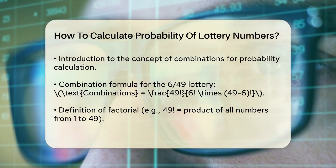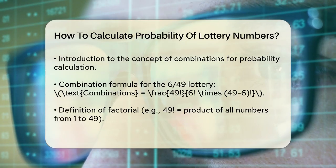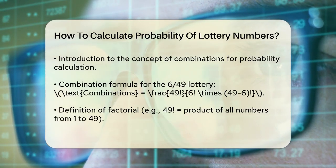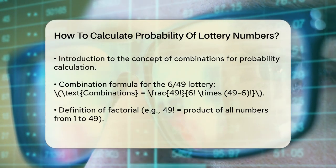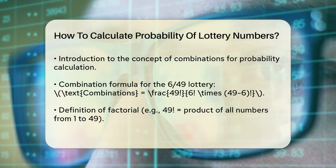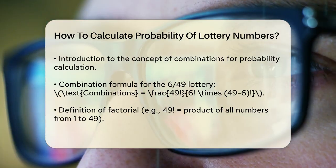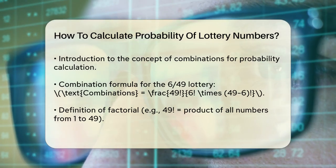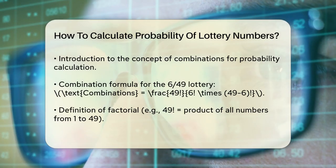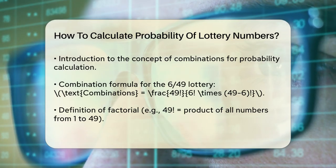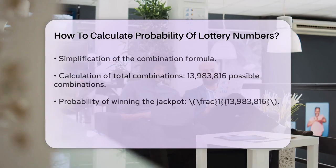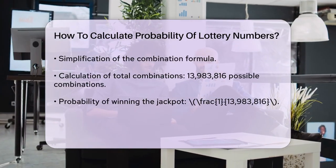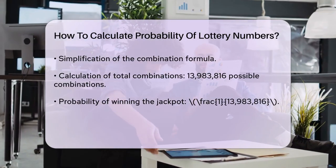Let's simplify this. The formula reduces to (49 × 48 × 47 × 46 × 45 × 44) / (6 × 5 × 4 × 3 × 2 × 1). When you do the math, you get a total of 13,983,816 possible combinations.